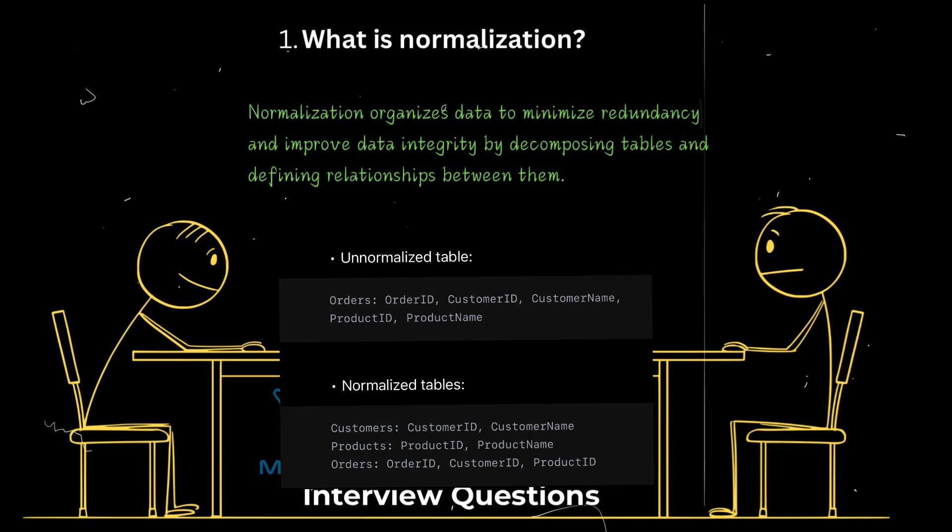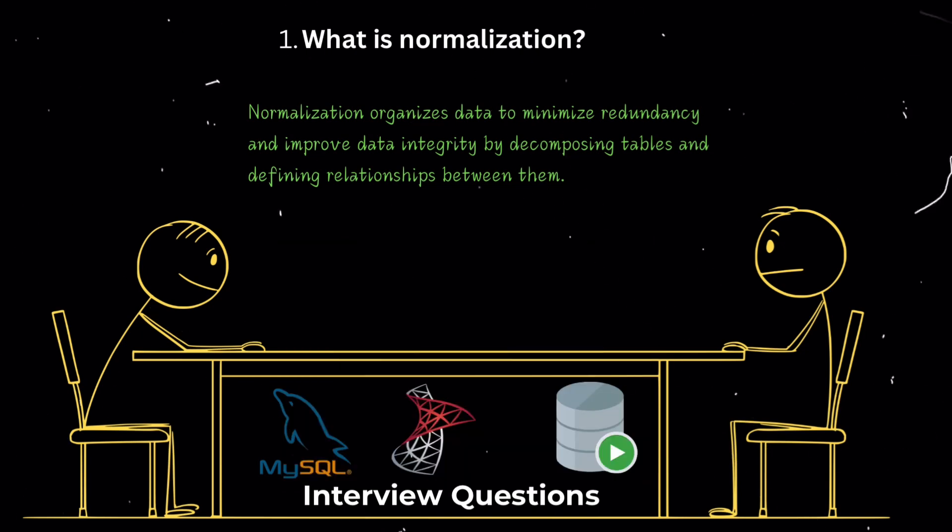What is normalization? Normalization is the process of organizing data in a database to minimize redundancy and improve data integrity. It involves decomposing a table into smaller tables and defining relationships between them to achieve these goals. Normalization helps in reducing data anomalies like insertion, deletion, and update anomalies.